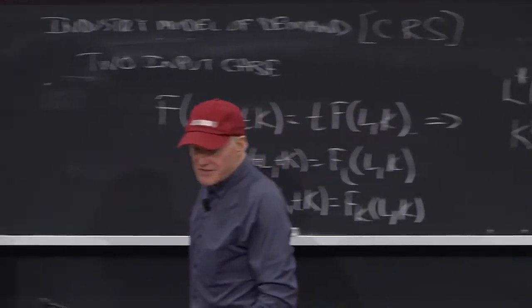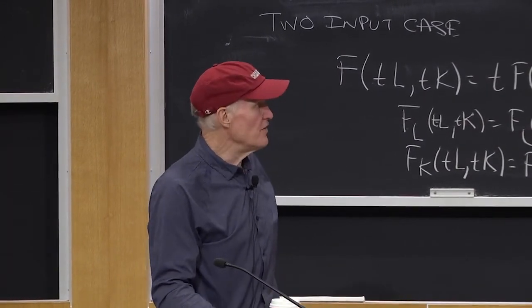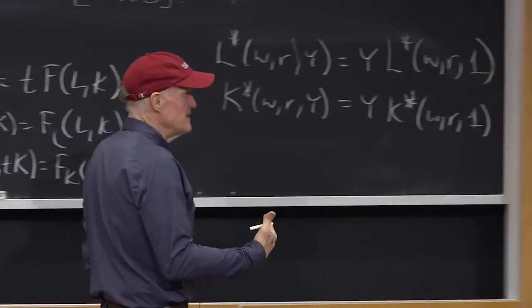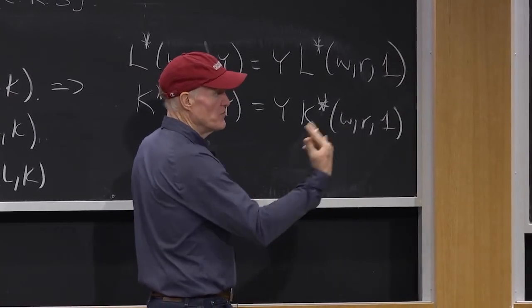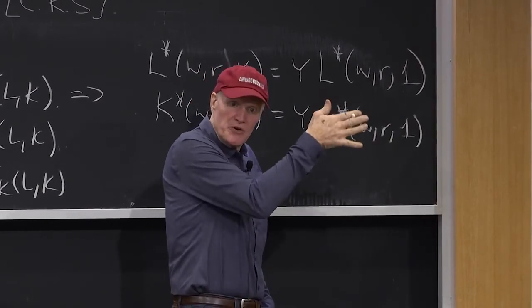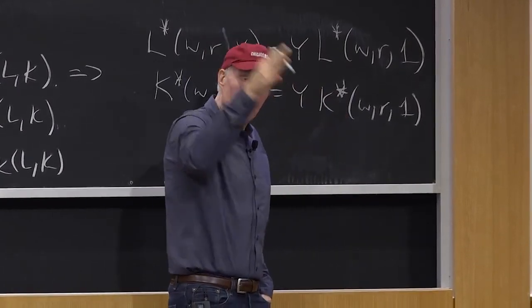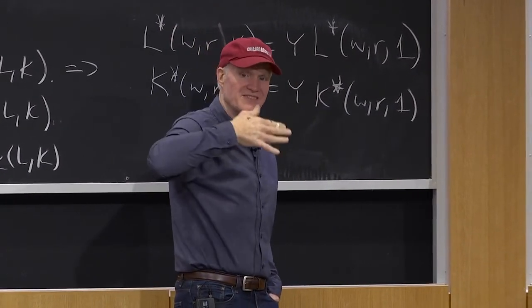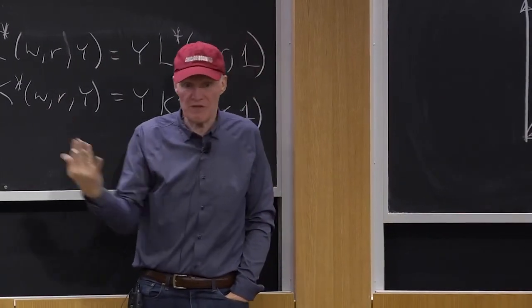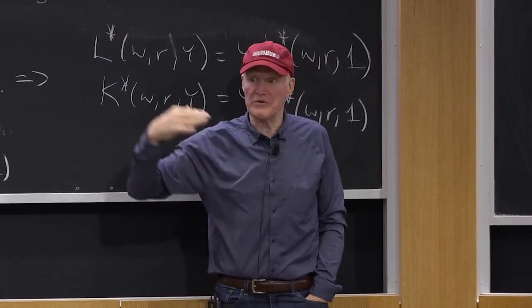So constant returns to scale is greatly simplifying. It tells me that, for example, basically you have two determinants of factor demand. One is relative prices are going to determine your ratio of K to L. And then the level of output is going to determine how much of each factor you use. It's a very nice decomposition between relative prices, which affect relative factor uses, and the level of output, which just increases everything.